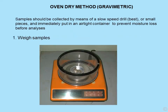So how do we do it? First of all we need a balance — a three-figure balance, a milligram balance. Samples are collected by means of a slow speed drill and put in an airtight container immediately. This prevents moisture loss before the analysis and allows them to be taken from site back to your office.